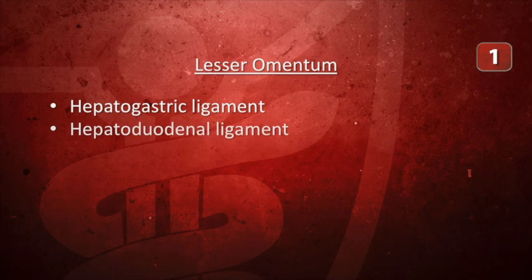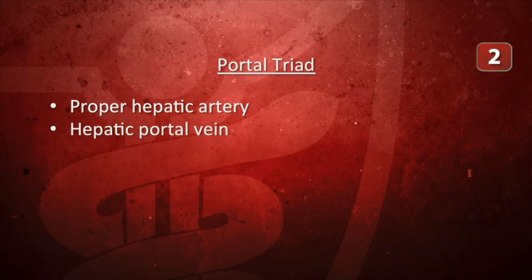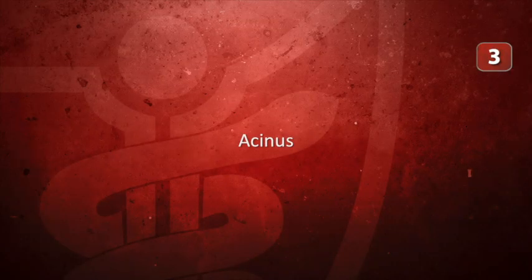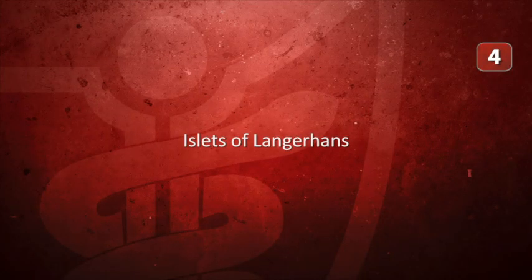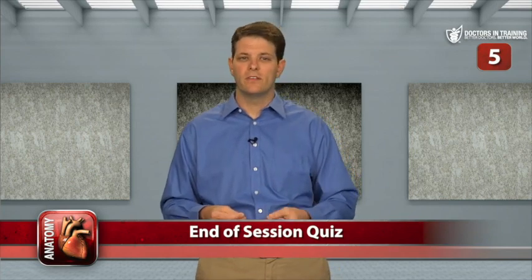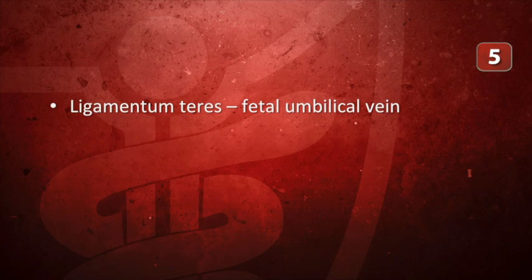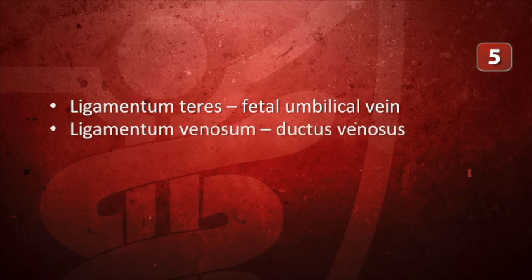First question: which two ligaments compose the lesser omentum? That's the hepatogastric ligament and the hepatoduodenal ligament. Next, what are the components of the portal triad? The proper hepatic artery, the hepatic portal vein, and the bile duct. Next, what is the functional unit of the exocrine pancreas? It's the acinus, which releases digestive enzymes. What are the clusters of pancreatic endocrine cells made up of alpha, beta, and delta cells called? Those are the islets of Langerhans. Finally, what ligaments are the remnants of the fetal umbilical vein and the ductus venosus? The ligamentum teres is the remnant of the fetal umbilical vein, and the ligamentum venosum is the remnant of the ductus venosus.